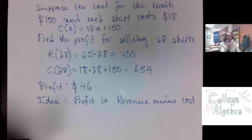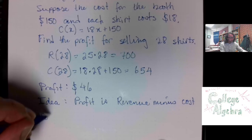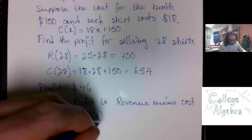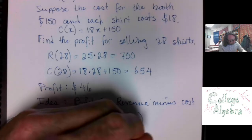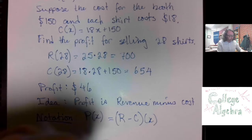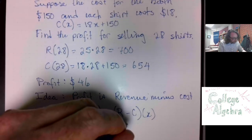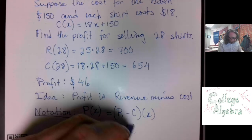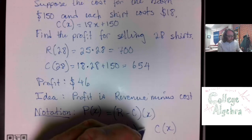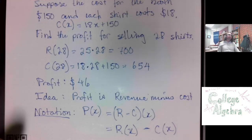So, this is a situation where it makes sense to subtract. What we usually do is we write it this way. Profit for x t-shirts is equal to revenue minus cost of x. Where this means what we're supposed to do is we're supposed to take whatever input we're given, put that into the revenue function, and then take what we're given and put that into the cost function, and then subtract the two. So this is an example of subtraction of two functions.